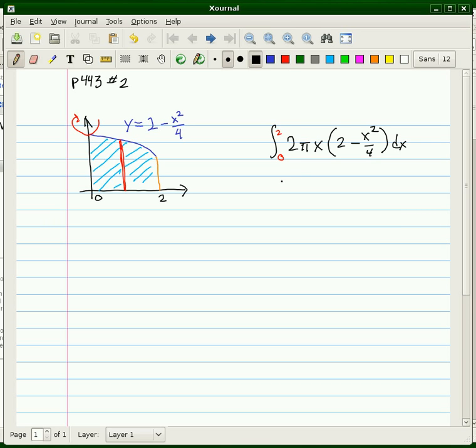So, this is a pretty standard antiderivative that we're going to need to do. Let me factor out the 2π and distribute the x. We're going to have to do the antiderivative of 2x minus x cubed over 4.